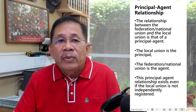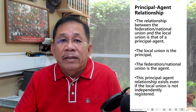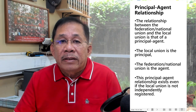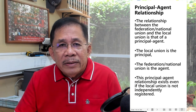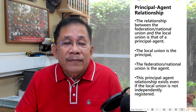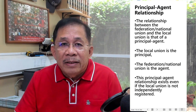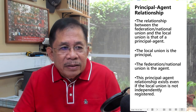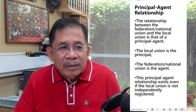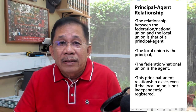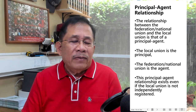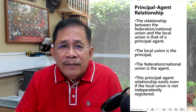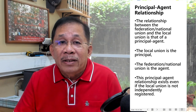The relationship between the federation or national union and the local union is that of agent and principal — the local union is the principal while the federation is the agent. This principal-agent relationship exists even if the local union is not independently registered. So if the federation enters into a CBA with a company and signs the CBA, the federation signs as agent of the local chapter. In case of illegal strike, liability for damages devolves upon the local union and not upon the federation, even if the federation was the one who signed the notice of strike.